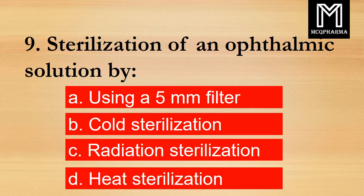Question number 9. Sterilization of an ophthalmic solution is done by? Option A: Using a 5 mm filter. B: Cold sterilization. C: Radiation sterilization. D: Heat sterilization. Correct answer: Option D, Heat sterilization.